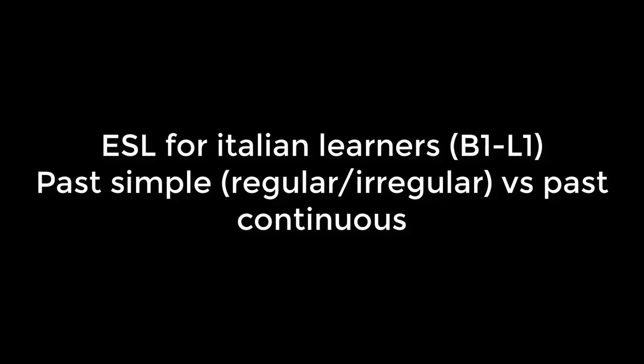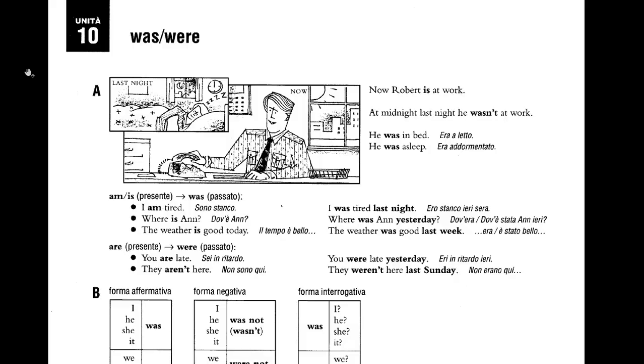First of all, you have to know that the difference between a regular verb and an irregular verb is that the past simple is different. If you have an irregular verb, the word changes — you have a different word. Whereas if you have a regular verb, the word is similar, meaning that you just have to add something else at the end. But for the moment, we just take a look at the past simple of the verb 'to be'.